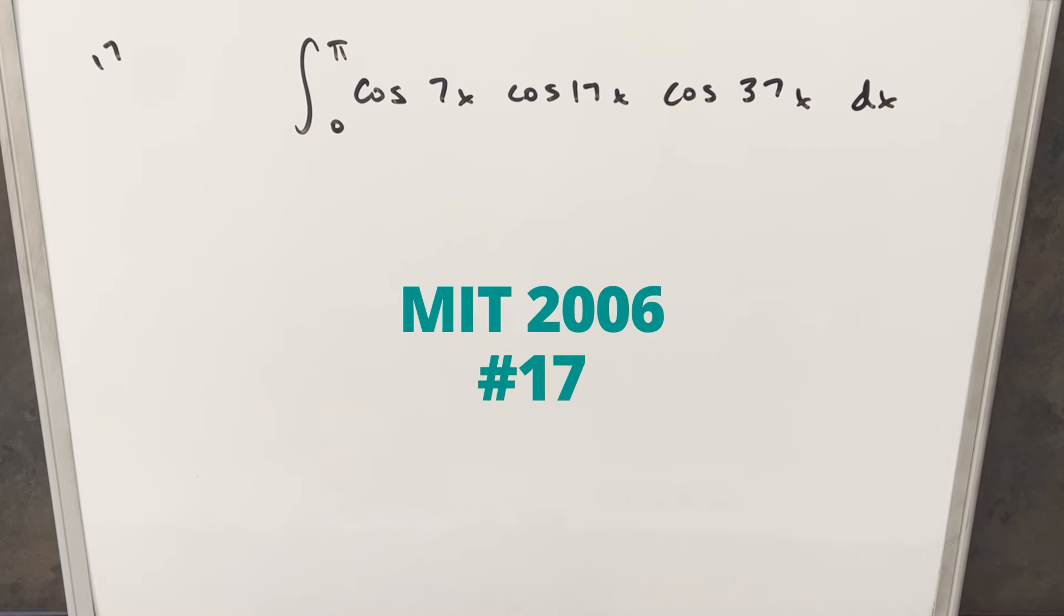Okay, we have here today another integral from the MIT integration bee from 2006, problem 17. We have the integral from 0 to pi, cosine 7x, cosine 17x, cosine 37x, dx.